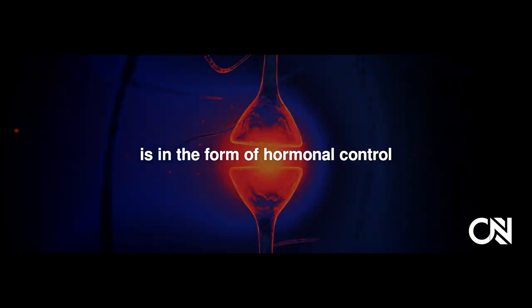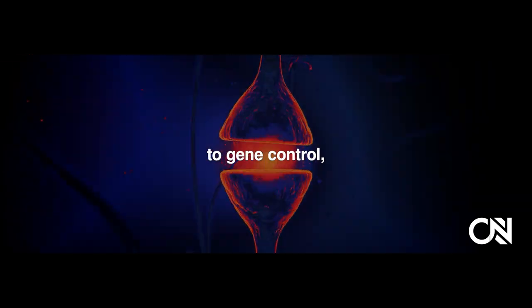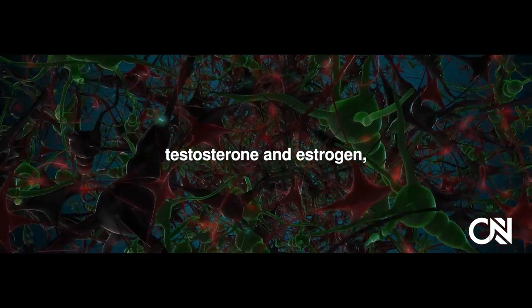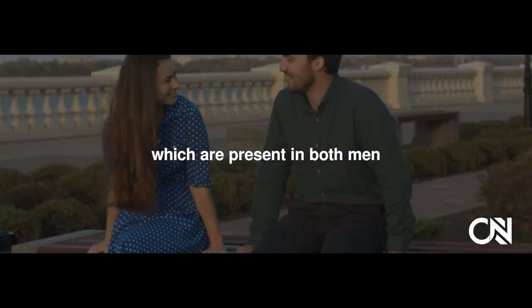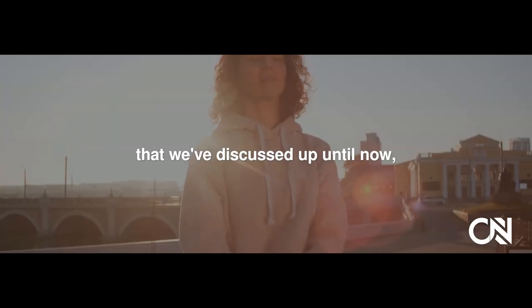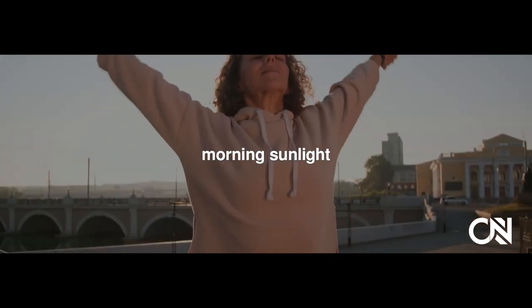And that slow system is in the form of hormonal control that then translates to gene control. So two hormones in particular, testosterone and estrogen, which are present in both men and women, males and females. And many of the things that we've discussed up until now, morning sunlight.